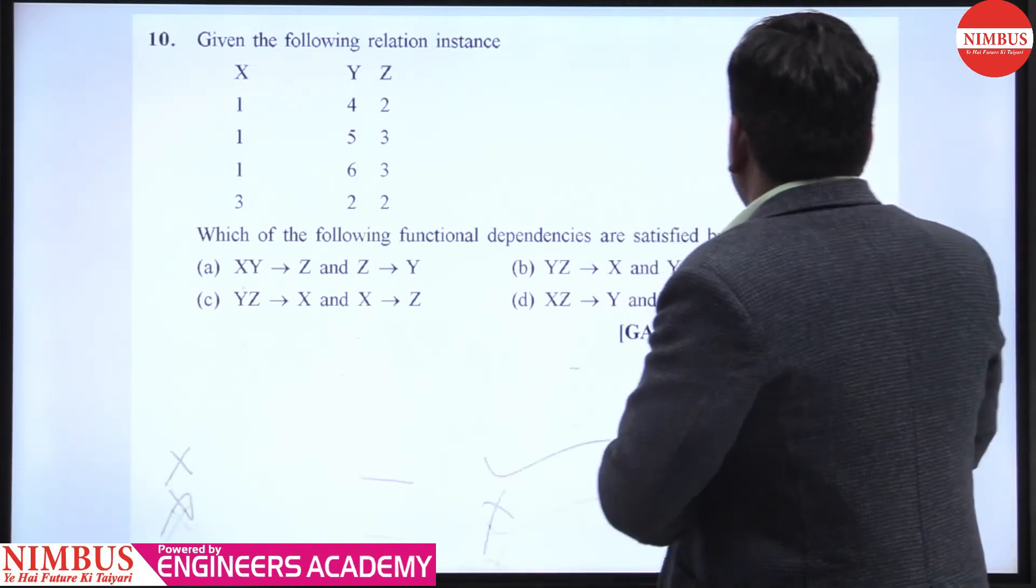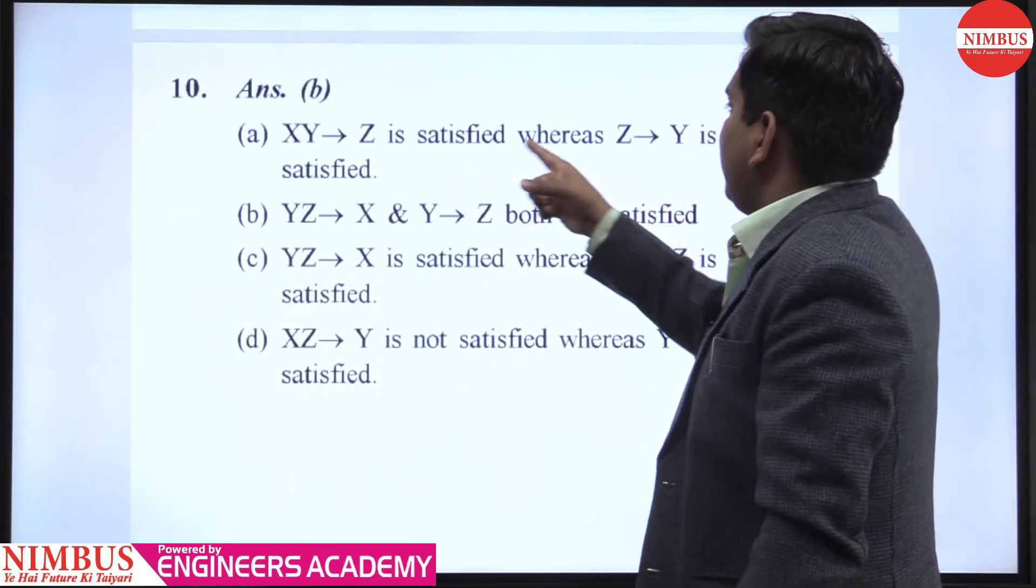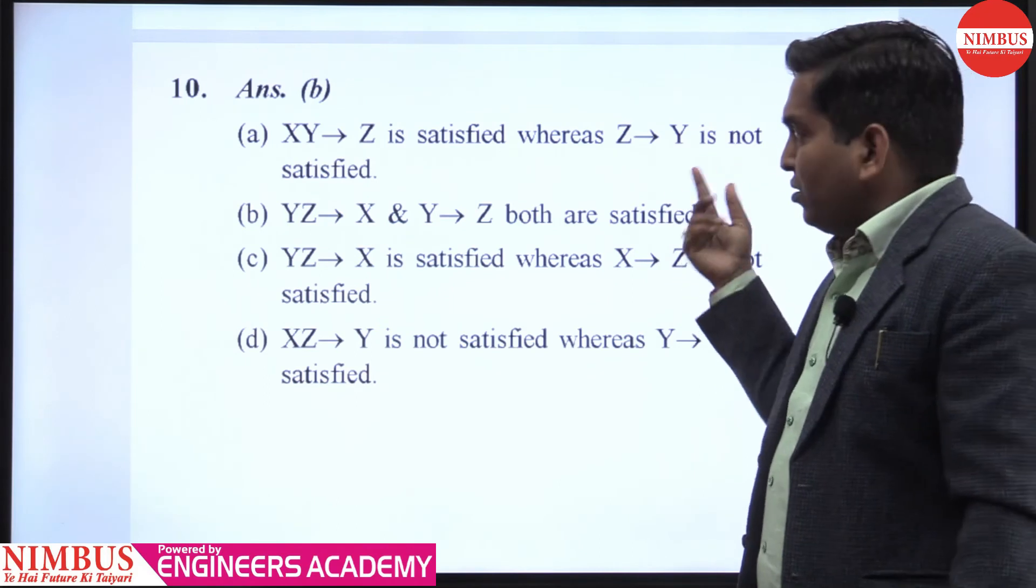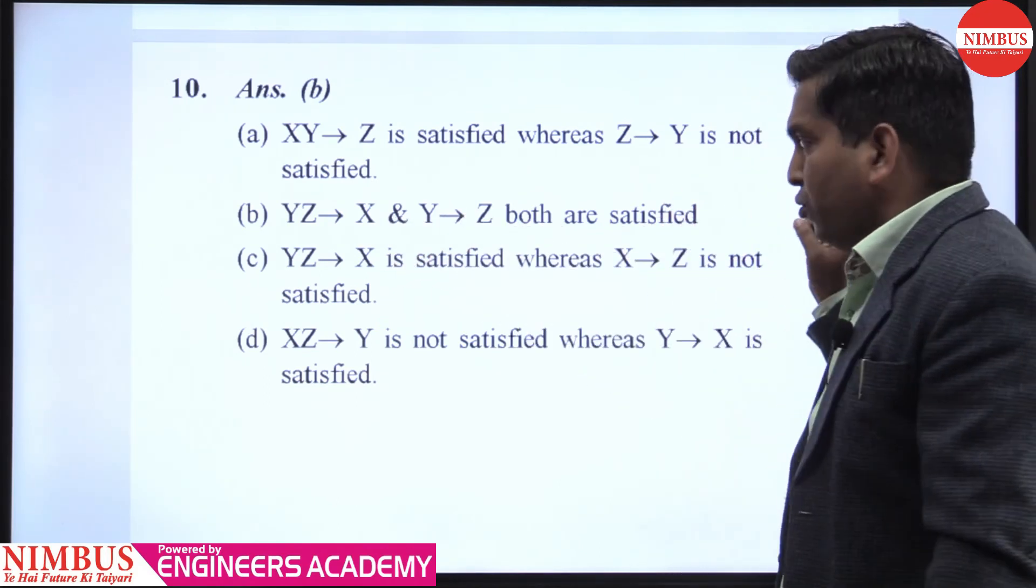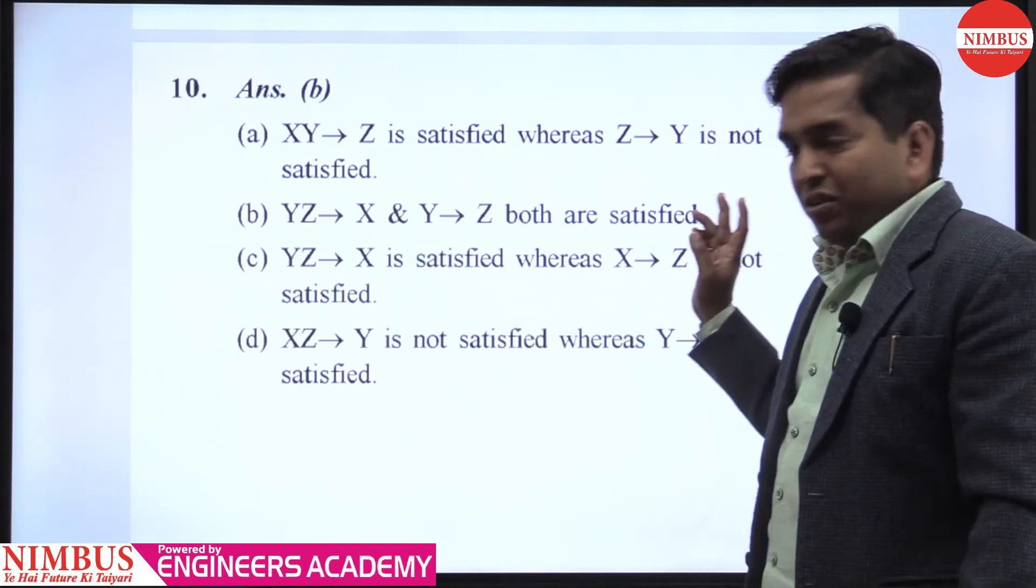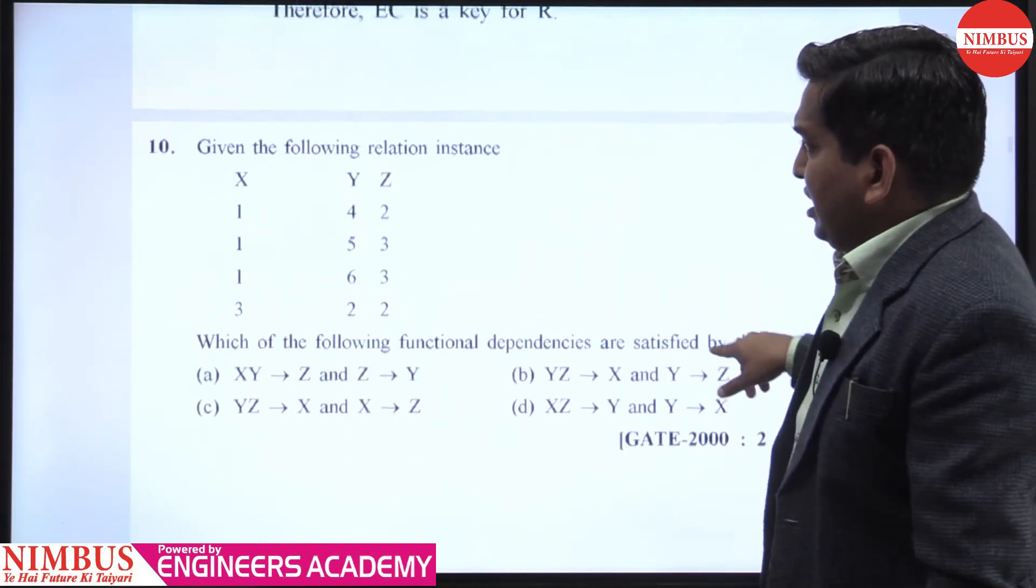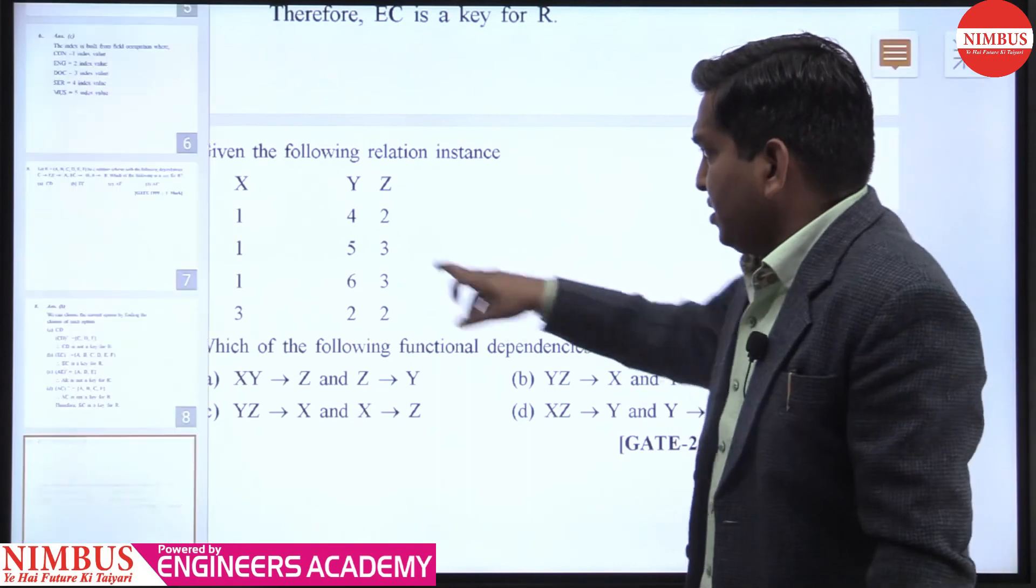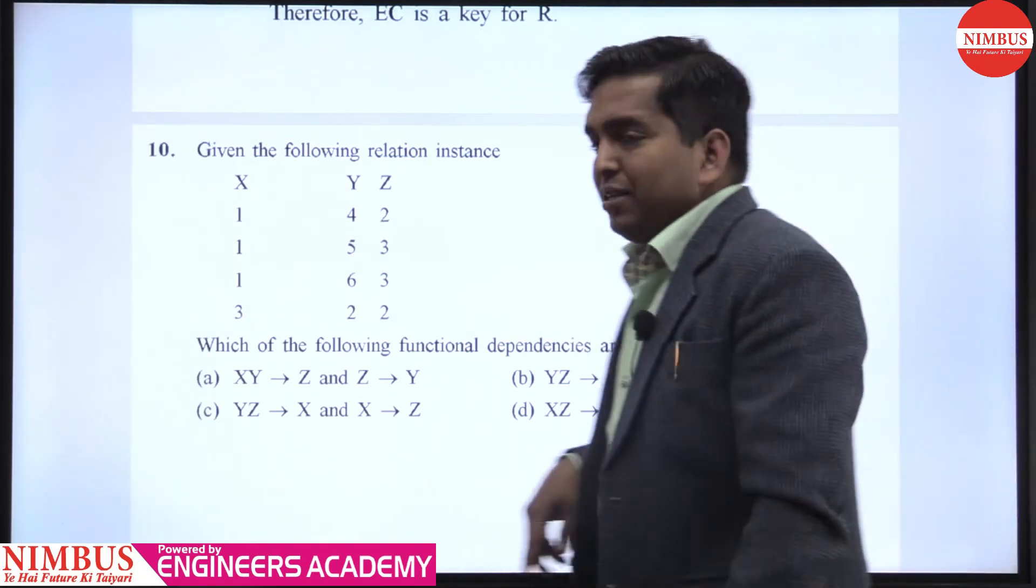YZ→X and Y→Z are both satisfied. This is satisfied, whereas X→Z is not satisfied, and this is also not satisfied. And Y→X is satisfied. In this case Y→X is satisfied. Clear? Ok, thank you.